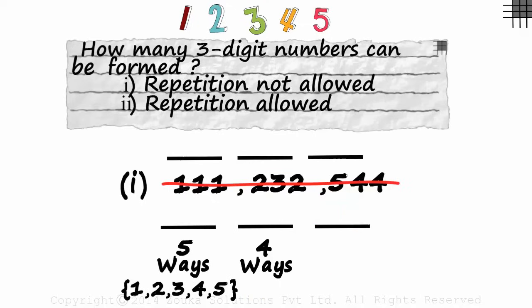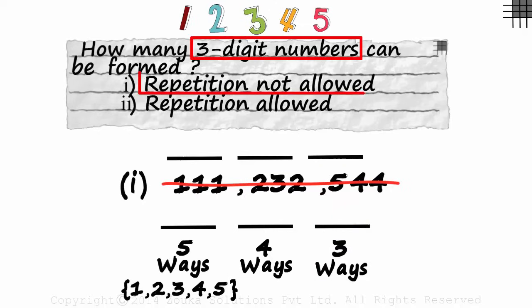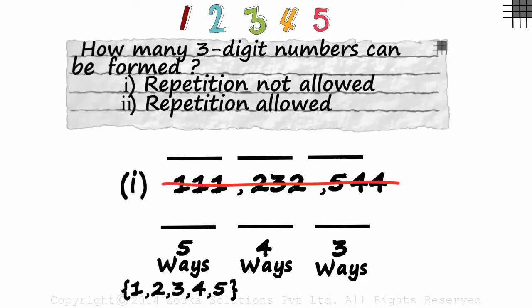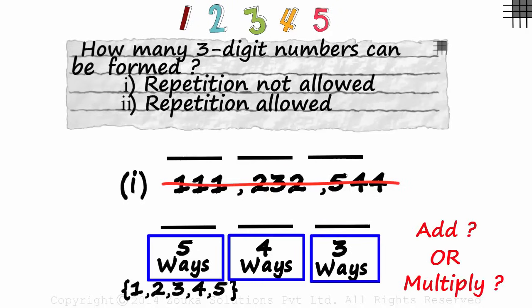It's simple. We have used up two digits here. Only three remain. The third slot can be filled in three ways. We're almost done. Almost! The first slot can be filled in five ways, the second in four ways and the third in three ways. So how many three-digit numbers can be formed if repetition is not allowed? Do we add these three or do we multiply them?